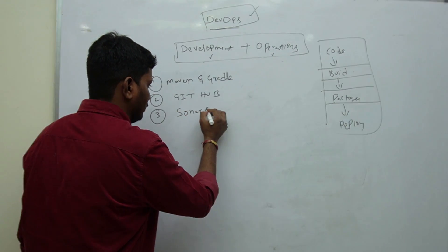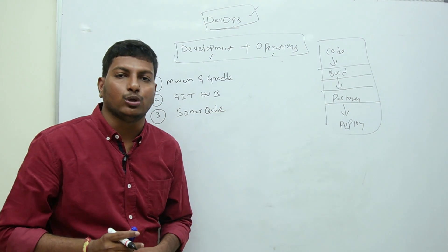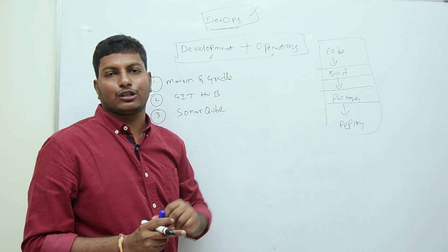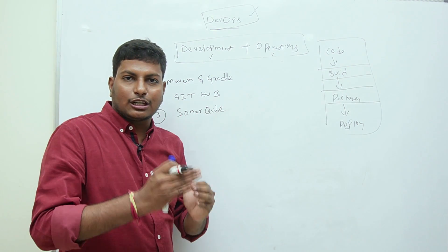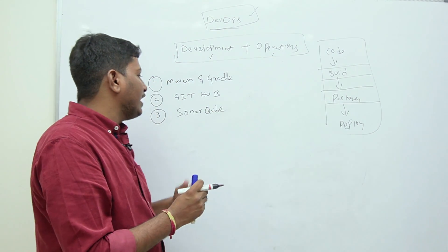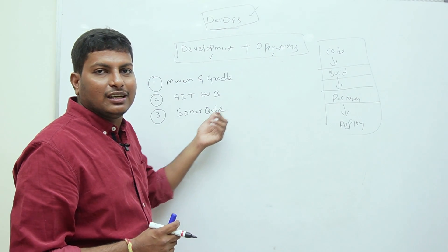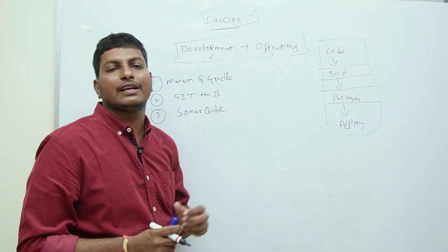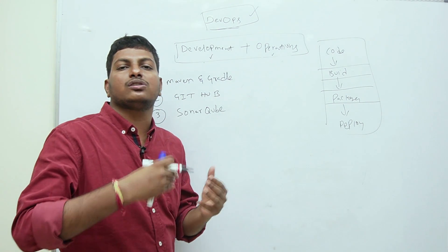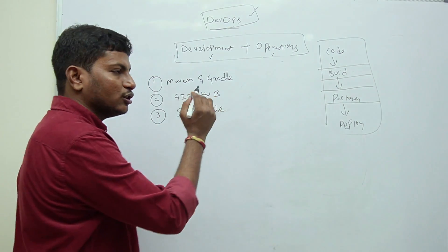Next is SonarQube. SonarQube is called a Code Quality Checking Tool. Developers write code, and SonarQube checks the quality of that code — whether it is following all the standards for delivery. If any issues are found in the code, developers will fix them. We perform code reviews and share the report with the development team using SonarQube.